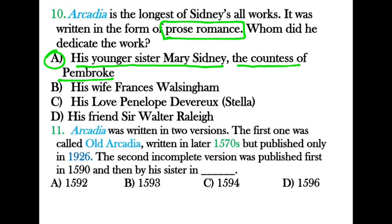Question eleven: Arcadia was written in two versions. The Old Arcadia was written in the 1570s but published only in 1926. The second, incomplete New Arcadia was first published in 1590, and then his sister Mary Sidney, the Countess of Pembroke, helped get it published in 1593.